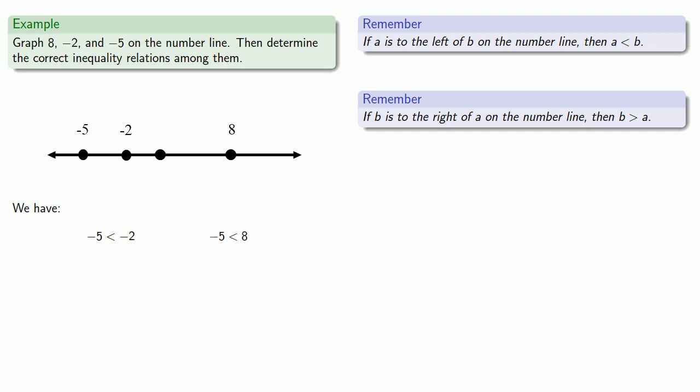How about negative 2? We see that negative 2 is to the right of negative 5, and so that means that negative 2 is greater than negative 5. On the other hand, negative 2 is to the left of 8, and so we write negative 2 is less than 8.